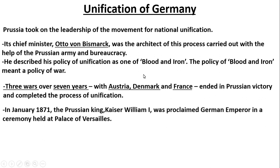To complete Germany's unification, Prussia had to fight wars against Austria, Denmark and France over seven years. But finally, Prussia was victorious and Germany's unification was complete. In January 1871, a ceremony was organized in the Hall of Mirrors at Versailles in France, in which the United German Empire was declared.